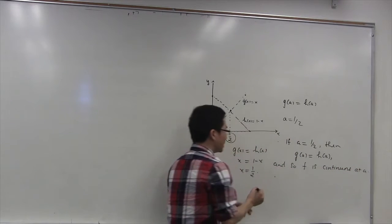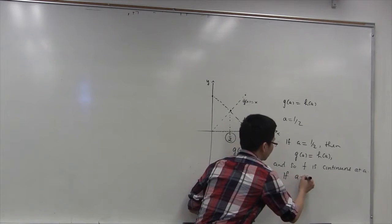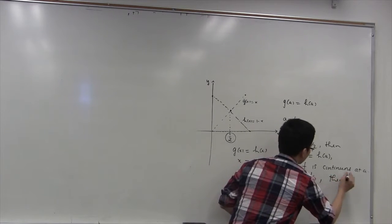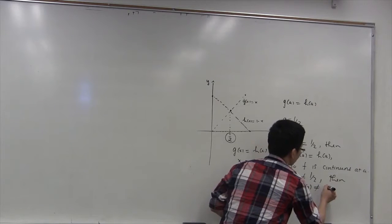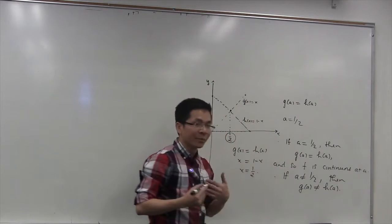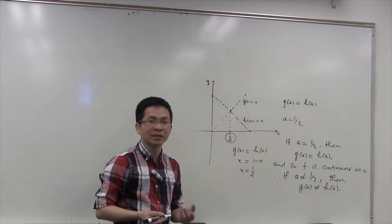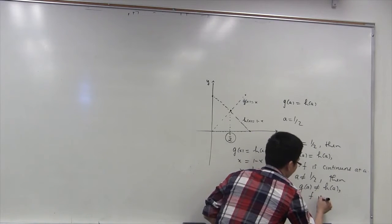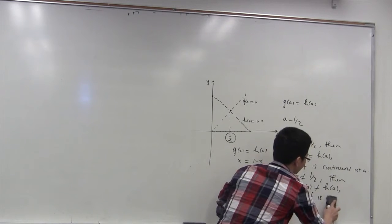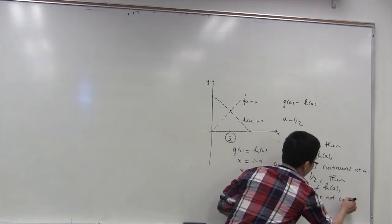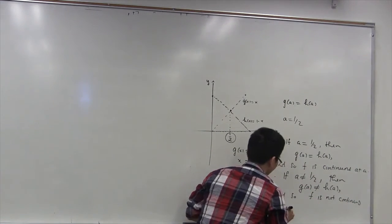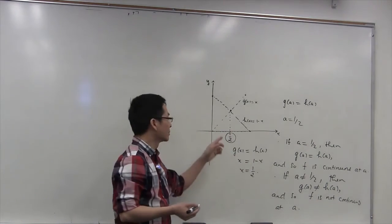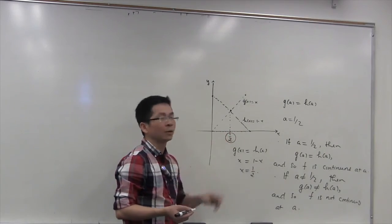If a is not equal to 1/2, then g(a) is not equal to h(a). So by the remark after the solution, the function f is not continuous at a. Therefore, f is continuous at only one point in [0,1], namely a = 1/2.